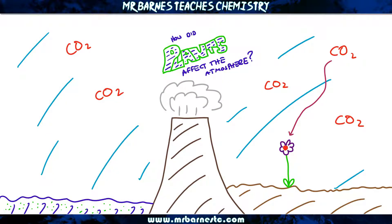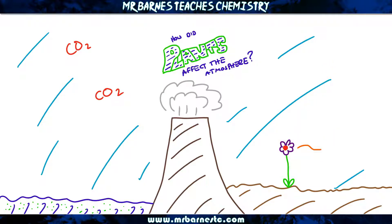When plants first started to appear on Earth many many years ago, they started a process called photosynthesis, which takes in carbon dioxide. When photosynthesis occurs, oxygen and glucose — which is C6H12O6 — are also produced.